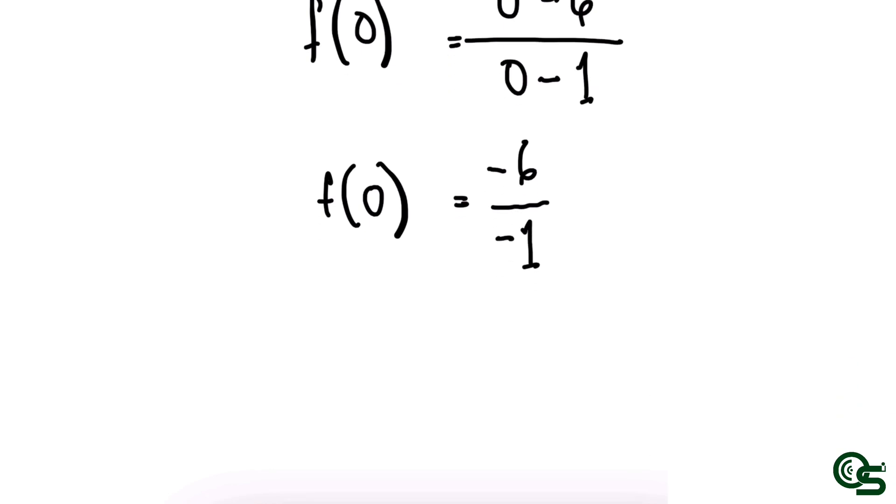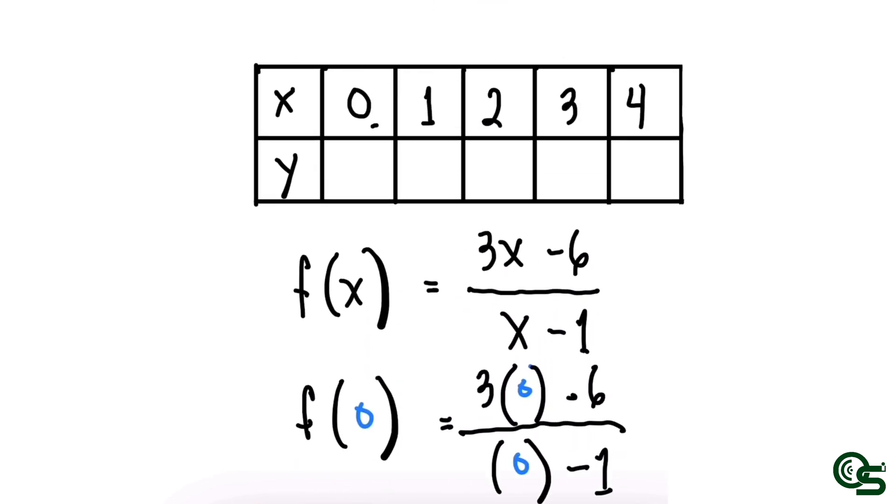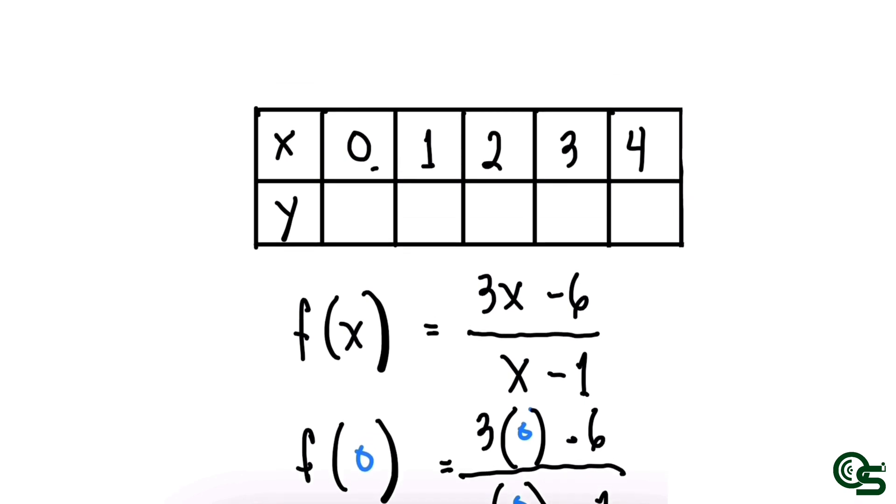We can simplify: f(0) is equal to negative 6 divided by negative 1, which equals positive 6. The computed value for the table of values is f(0) equals 6.